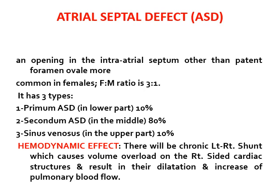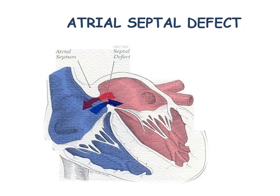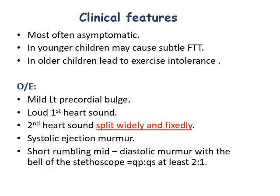Clinical features of ASD: most often asymptomatic in young children, may cause failure to thrive, and in older patients leads to exercise intolerance. On examination there is a mild left precordial bulge, loud first heart sound, and the most characteristic feature — fixed wide splitting of the second heart sound. There is a systolic ejection murmur and sometimes a rumbling diastolic murmur when the Qp:Qs ratio exceeds 2:1.